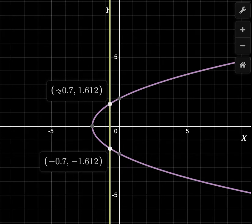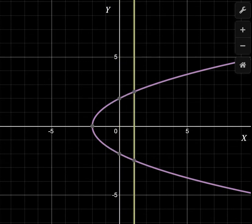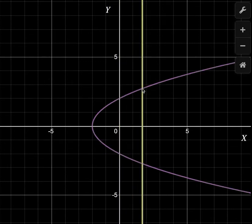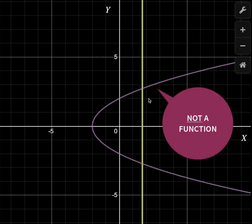With a function, you can only have one output for each input. Here I have an input of negative 0.7, but I have an output of 1.6 and also an output of negative 1.6. When I drag this line across, it's meeting the curve in two locations. So this curve is not a function.